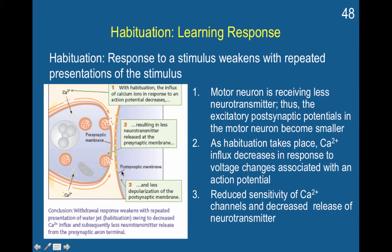In conclusion, this withdrawal response weakens with repeated presentation. A motor neuron is receiving less neurotransmitter, thus the excitatory postsynaptic potentials in the motor neuron become smaller. As habituation takes place, the calcium influx decreases in response to voltage changes associated with an action potential, and this reduced sensitivity of calcium channels results in decreased release of neurotransmitter.